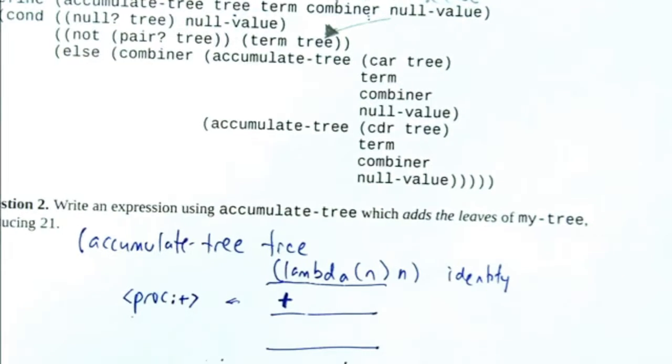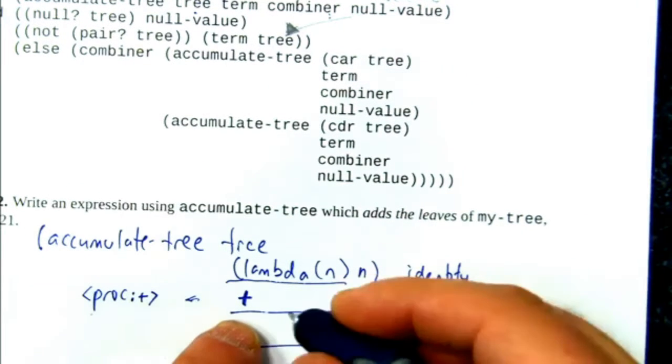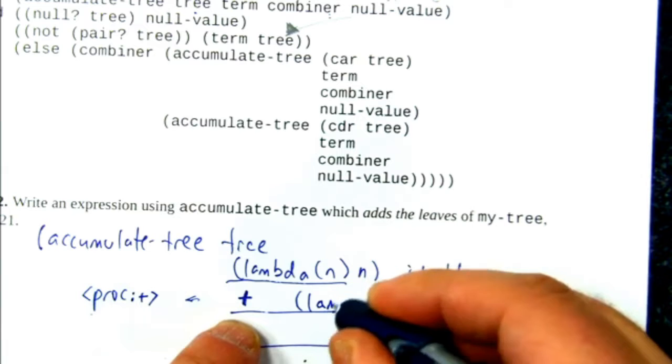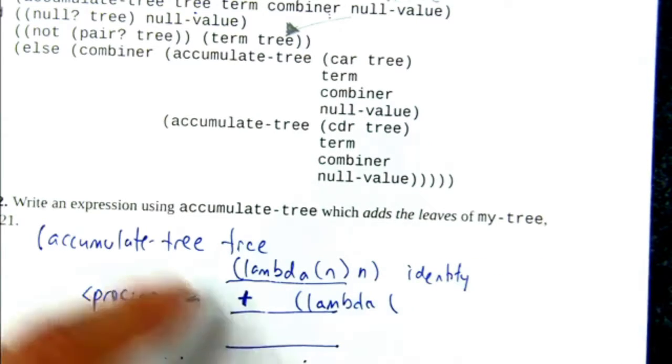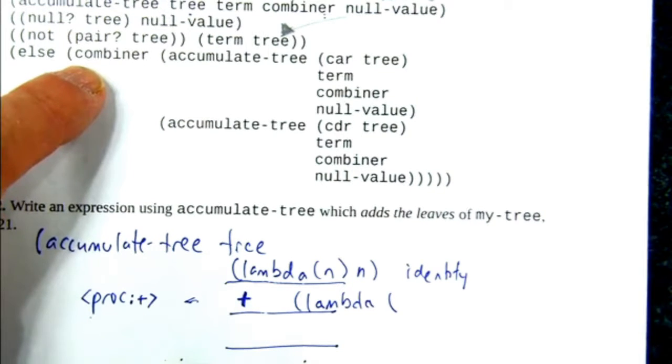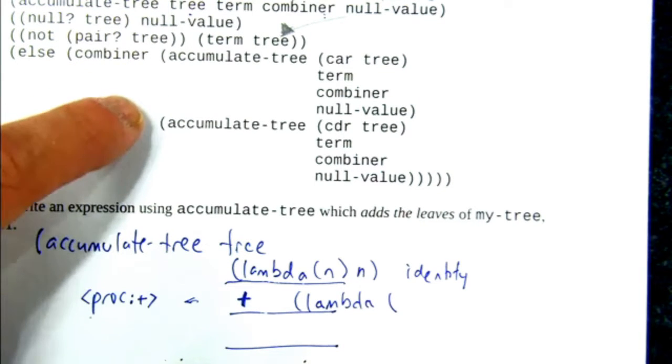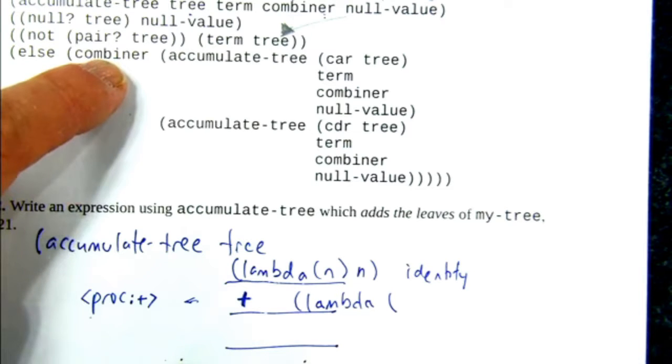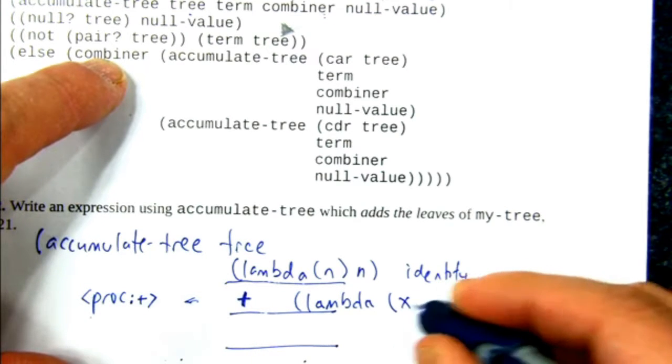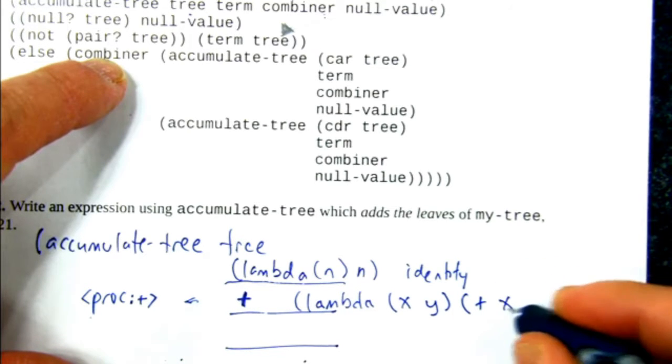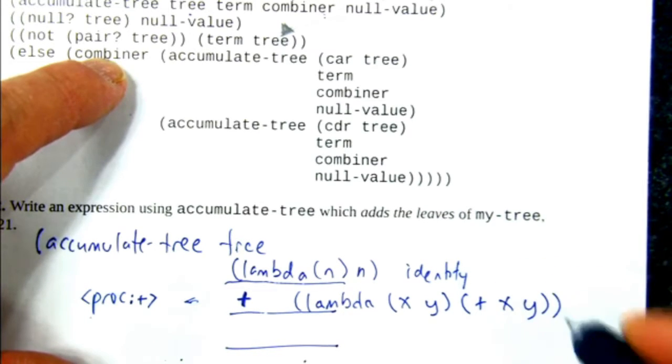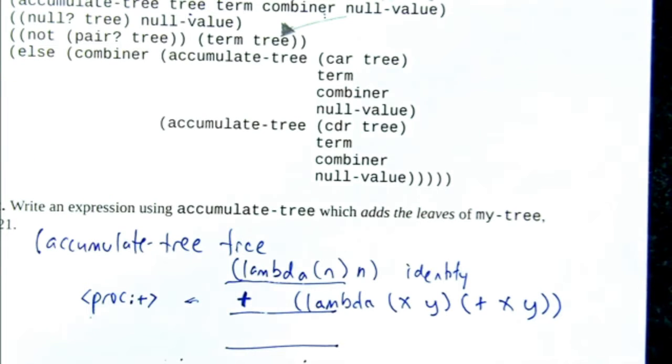If you are uncomfortable writing plus, you could also say it's a function of two parameters. Because remember, it's going to be the result of accumulating the car and cdr side. So you know it's a function of two parameters. We'll call them x and y. And then you could say it's a function that adds x and y. Those two things are equivalent.